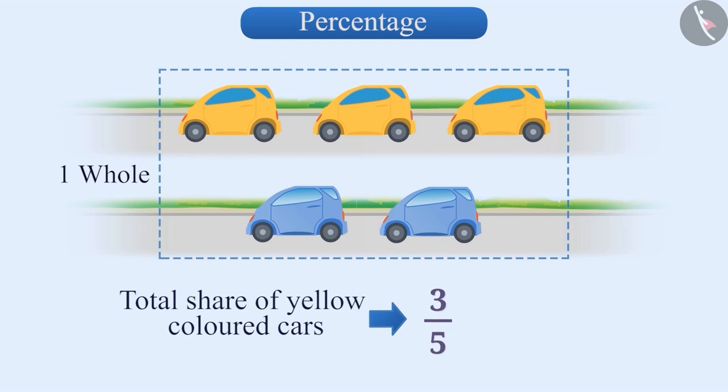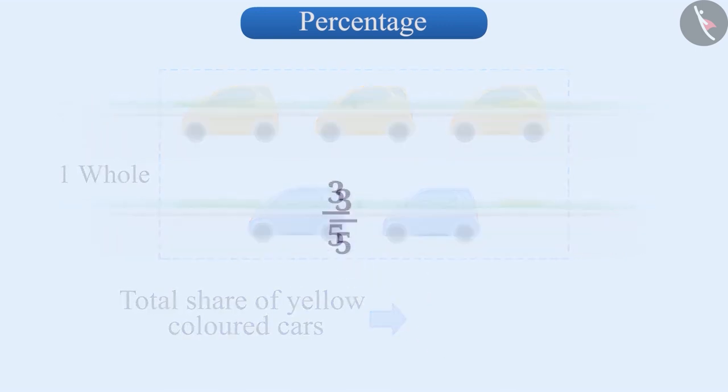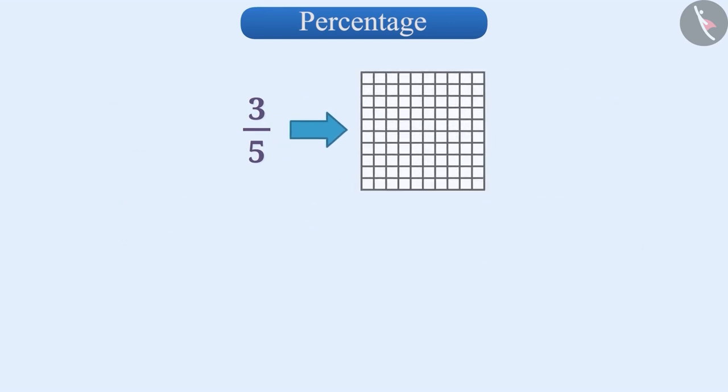If we have to represent this fraction in a square of 100 equal parts, then how will we do it? We will find an equivalent fraction to 3 by 5 whose denominator is 100. For this, we will multiply both the numerator and denominator of the fraction 3 by 5 by 20 to get 60 by 100.